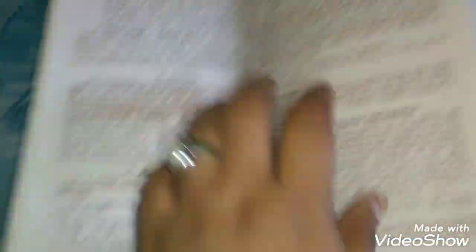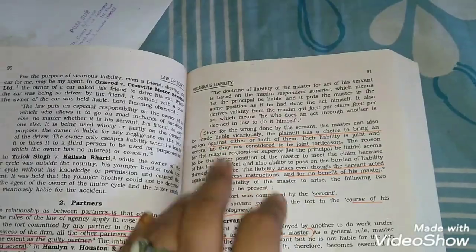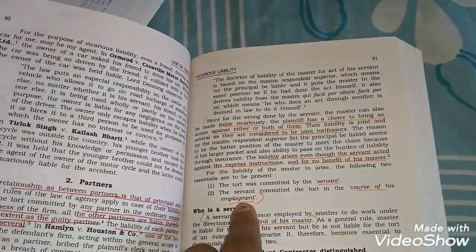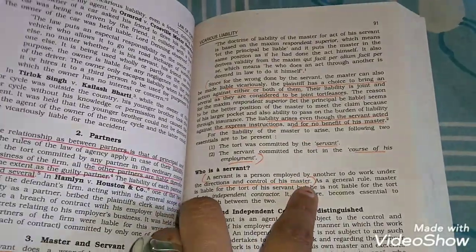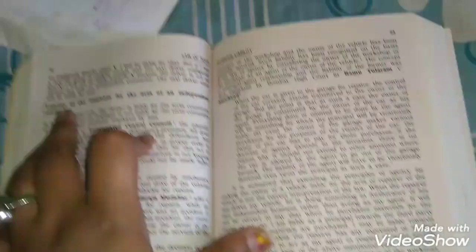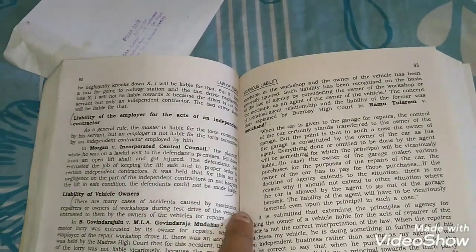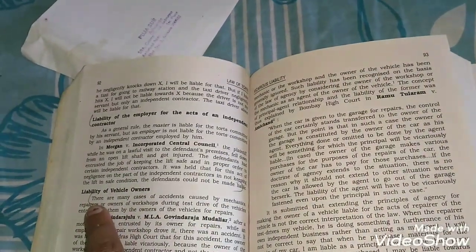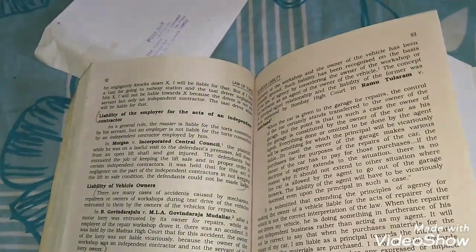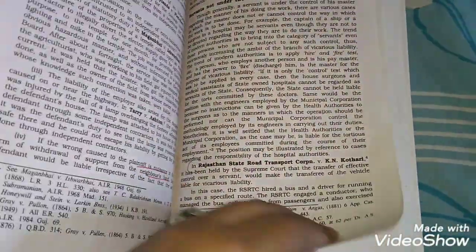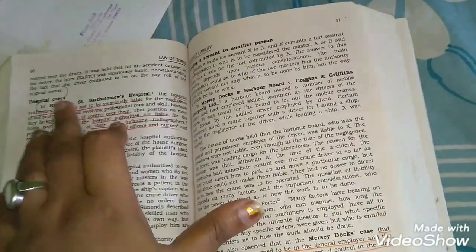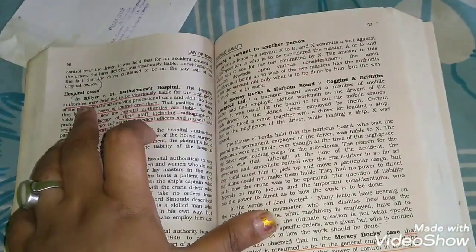Since from there to employment. Who is a servant: a servant till of his master. Liability of the employer from there to made liable. Liability of vehicle owner: from there to lorry owner. Come to next page, page number 95. In Rajasthan State Road Corporation from there to the next page, original owner.